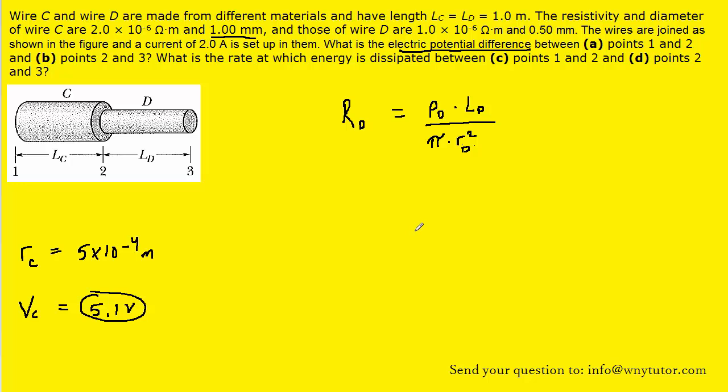Part B will be very similar. This time, it's between points 2 and 3, whose electric potential difference we are trying to figure out. That exists in wire D. The first thing we'll have to do is determine the resistance of wire D, just like we did before for wire C. Note that the diameter and resistivity of wire D are different.